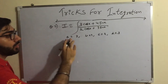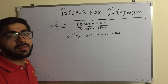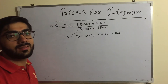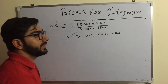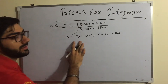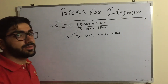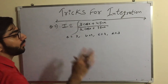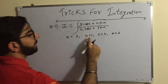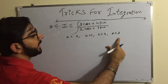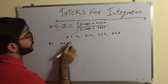Here a = 3, b = 4, c = 2, and d = 3. For class 11 or class 12 students — don't write this identification step in your answer sheet, because the teacher will not give you marks for it. This is only for understanding.